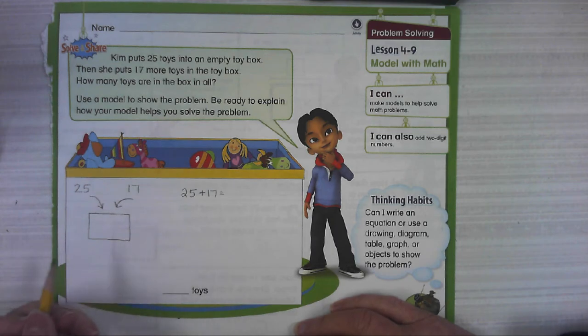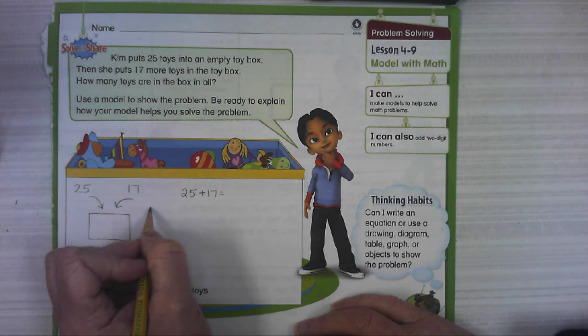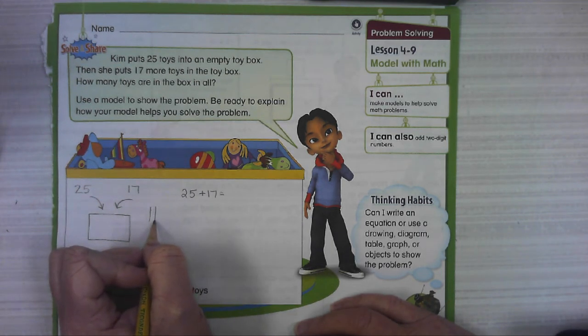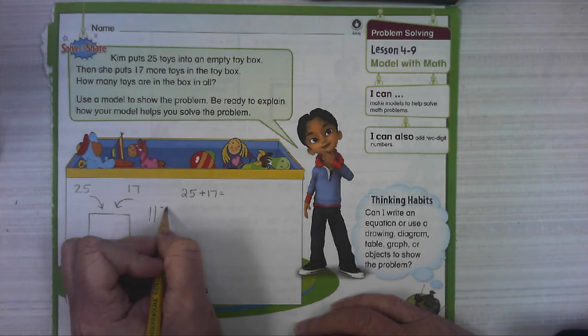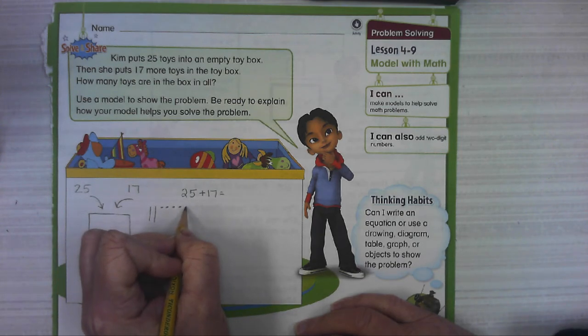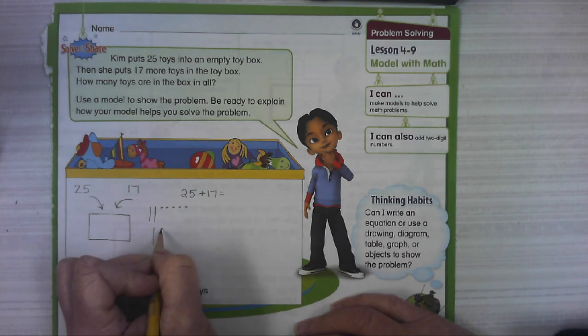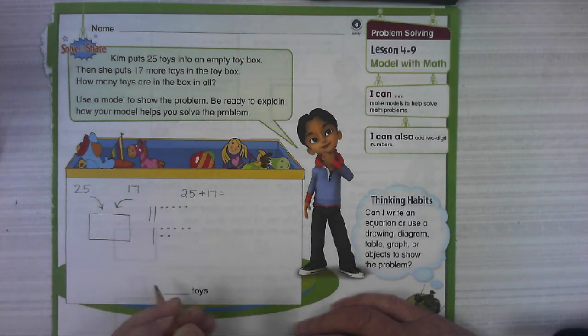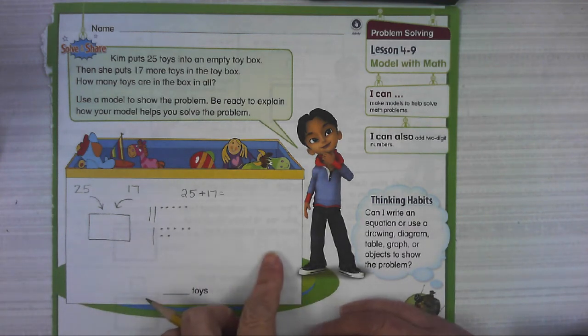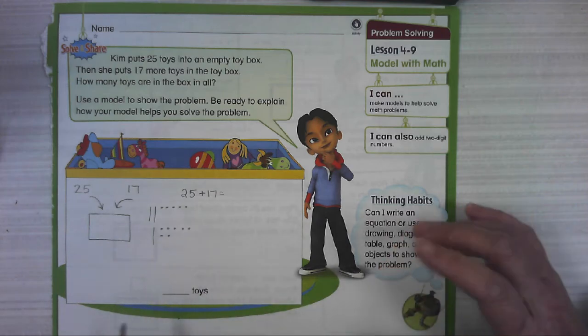The first way I'm gonna model this is with place value blocks or base 10 blocks. So I'm gonna draw 20, two 10s, 5 and 17. So 10 and 7 ones. While I'm doing this I'm actually gonna do expanded form at the same time so you can kind of see how they match.